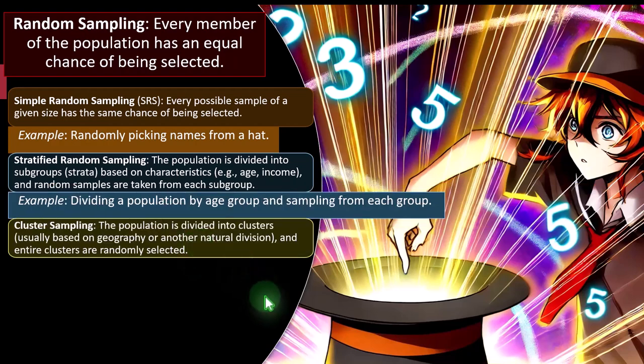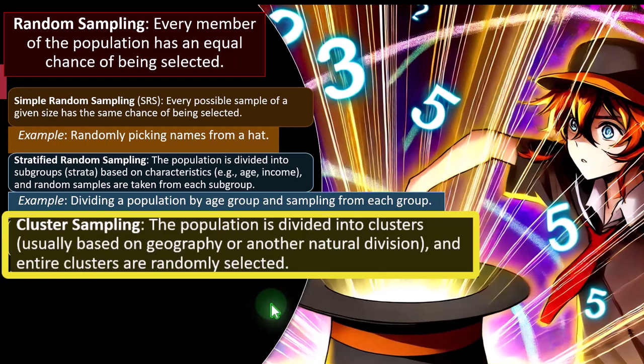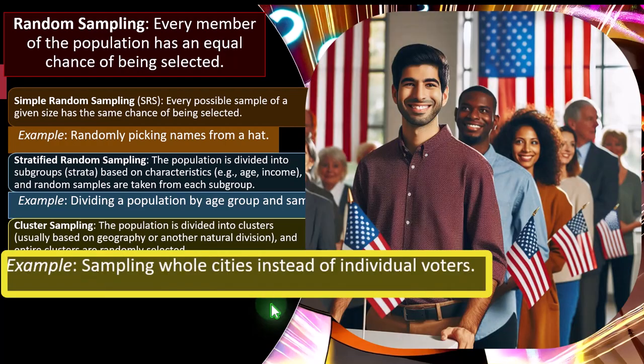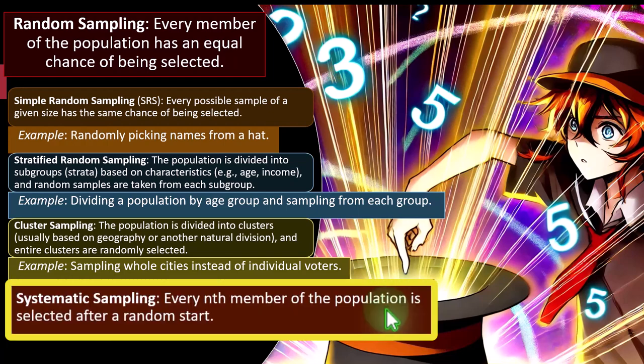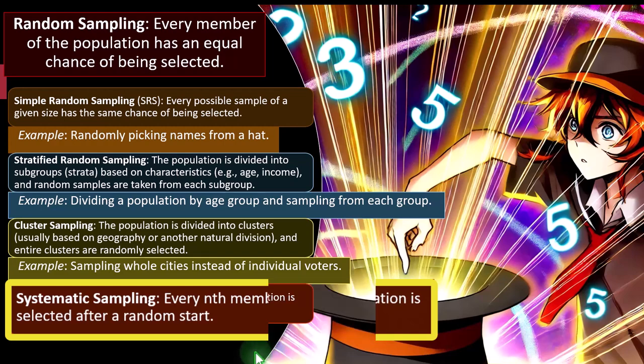Cluster sampling is where the population is divided into clusters, usually based on geography or another natural division, and entire clusters are randomly selected. Example: sampling whole cities instead of individual voters. In a presidential election poll, you'd want to sample people not just nationally but also by geographic location. Similar strategies might apply when testing animal populations or mineral content in rocks across different geographic areas.